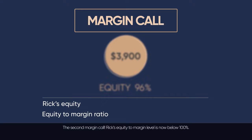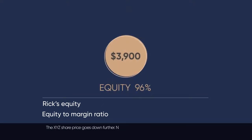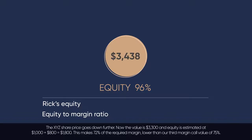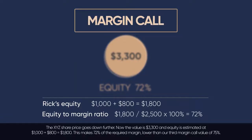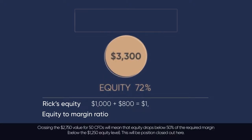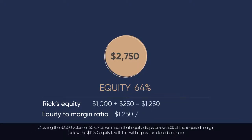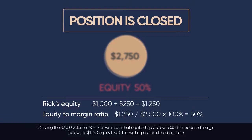The XYZ share price goes down further. Now the value is $3,300 and equity is estimated at $1,000 plus $800, which equals $1,800. This makes 72% of the required margin — lower than the third margin call threshold of 75%. Crossing the $2,750 value for 50 CFDs will mean that the equity drops below 50% of the required margin, below the $1,250 equity level. This is where the position is closed out.